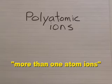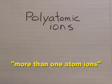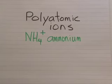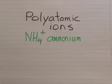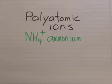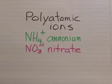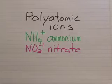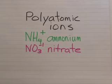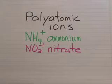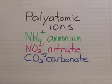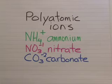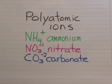Let's take a quick look at polyatomic ions. These are ions that have more than one atom. The one common positive cation is ammonium, NH4 with a plus one. Nitrate is negative one, NO3 with a negative one charge. Carbonate is another common one — CO3 with a negative two charge.